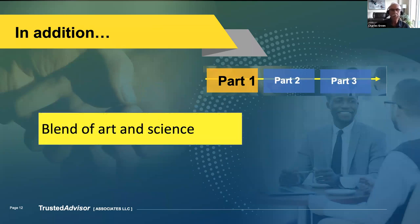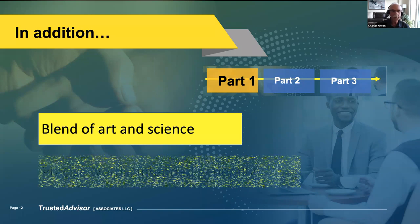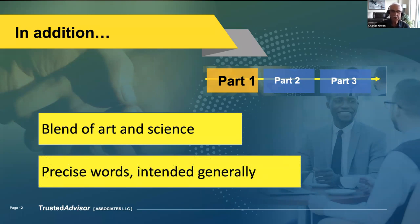What we're about to talk about today is a blend of art and science. A lot of people ask for tips and tricks — how do you say it? I'll give you very detailed quotations and go at some length on how you say it. But the precise words I'm going to give you are intended generally. You have to come up with your own words. When you're dealing with trust, there's almost no set of magic words that work for everybody. Every two people meeting are in a unique situation.